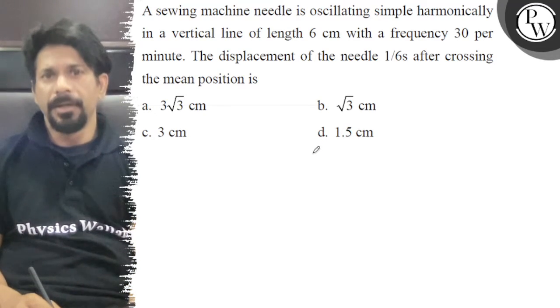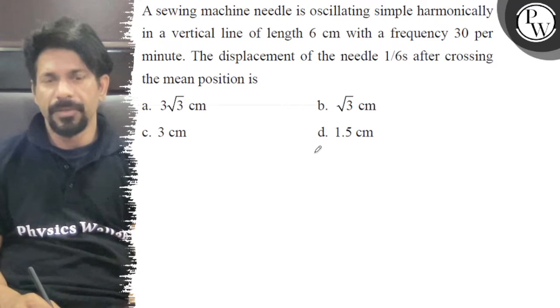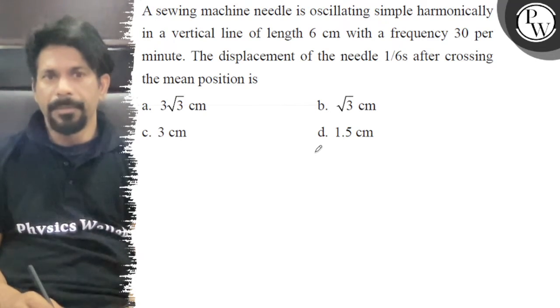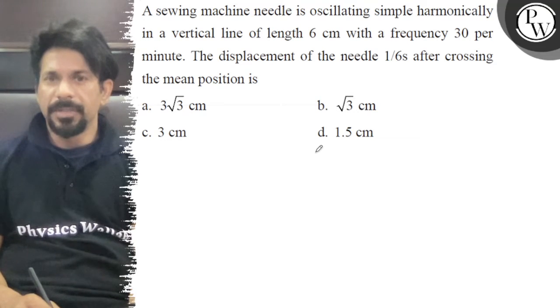A sewing machine needle is oscillating in simple harmonic motion in a vertical line of length 6 cm with a frequency of 30 per minute. The displacement of the needle 1 by 6 seconds after crossing the mean position is...